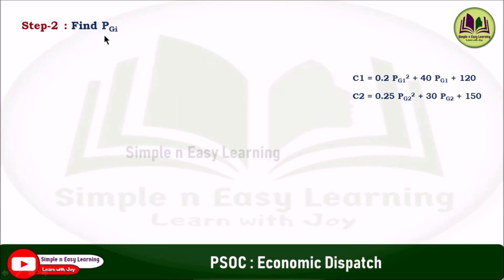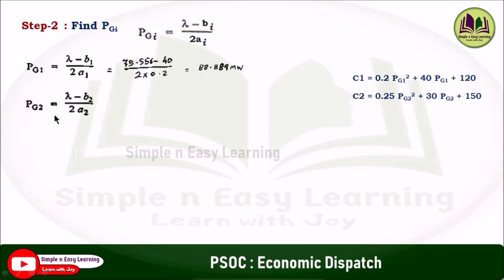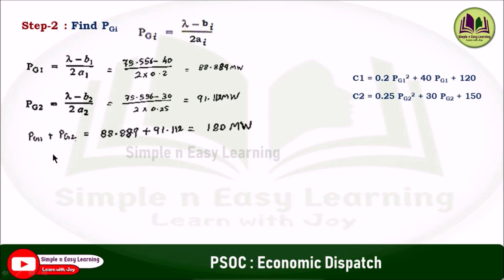Step 2: find the generation PGi using the formula lambda minus Bi by 2Ai. For the first unit, PG1 is equal to lambda minus B1 by 2A1. Substituting A1, B1, and lambda: 75.556 minus 40 divided by 2 into 0.2, that gives 88.889 megawatt. Similarly, for the second unit substituting the values of B2, A2, and lambda, we get 91.112 megawatt. Adding both generations gives 180 megawatt.